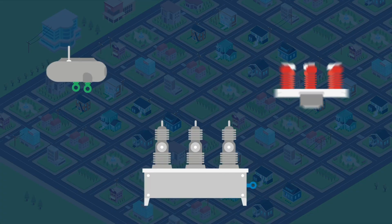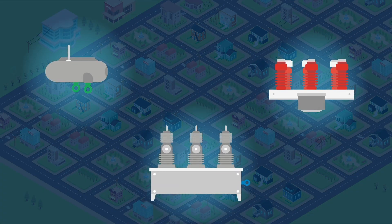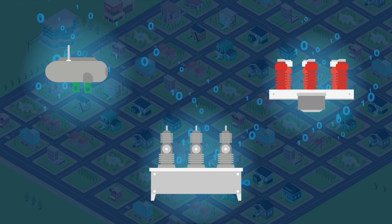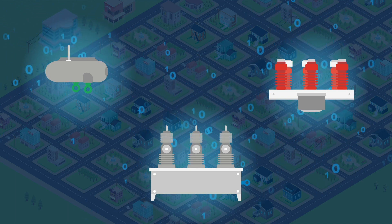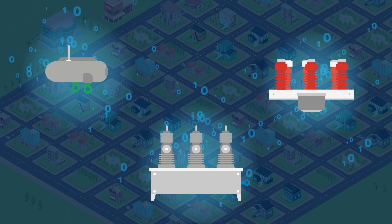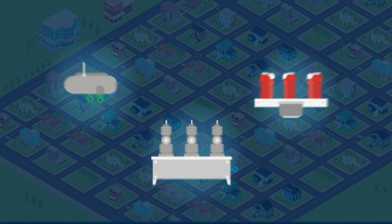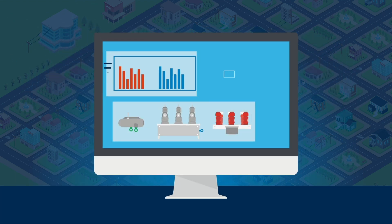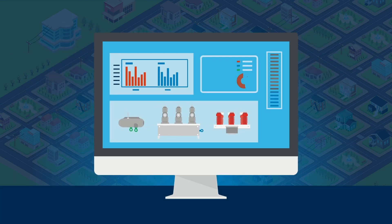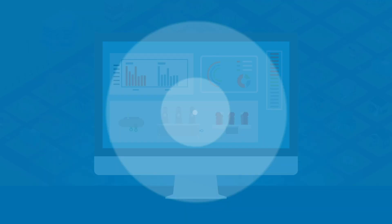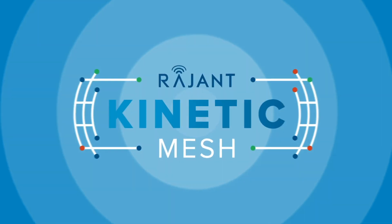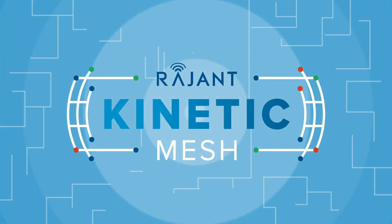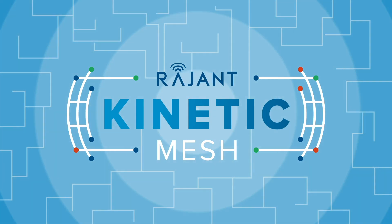But to enable these advanced functions, you need digitized real-time data from line sensors and smart controllers on reclosers and switches, reliably relayed between devices into your central distribution and outage management systems. That's why you need Ragent Kinetic Mesh, the only network designed to work like the power distribution grid itself.